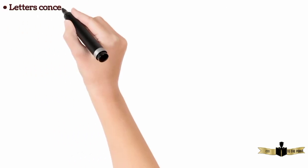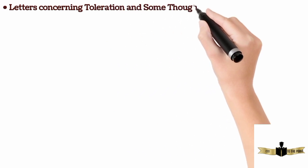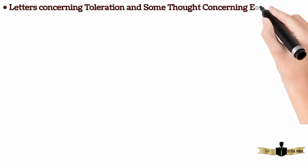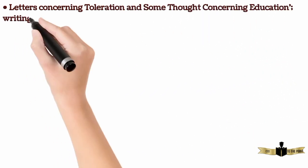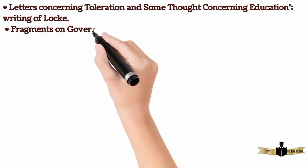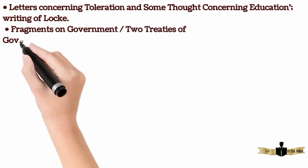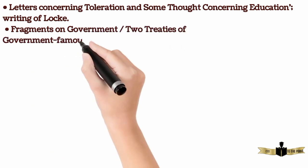3. Letters Concerning Toleration, and Some Thoughts Concerning Education, writings of Locke. 4. Fragments on Government, and Two Treatises of Government, a famous book of John Locke.